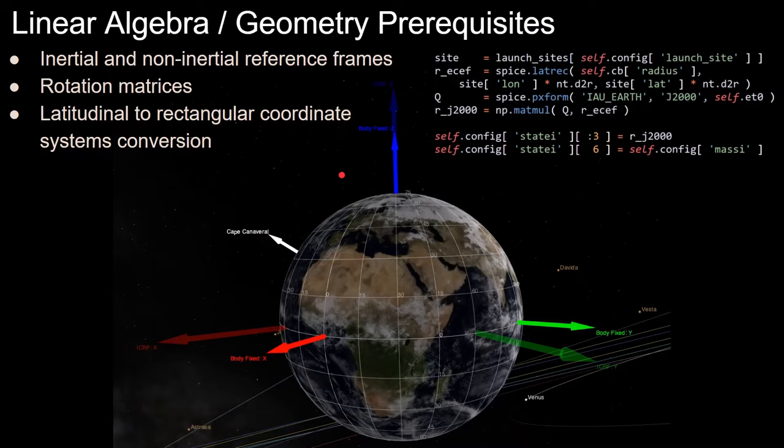We will also need to understand inertial and non-inertial reference frames. Since we define points on earth in latitude and longitude coordinates we must be able to convert latitude and longitude coordinates to earth centered earth fixed rectangular coordinates and convert earth centered earth fixed coordinates to earth centered inertial coordinates.